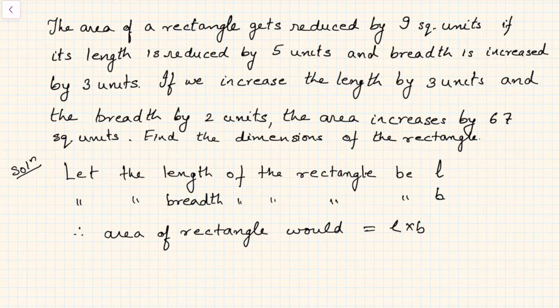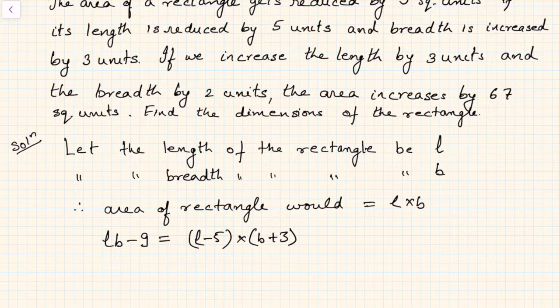Now they say the area of a rectangle gets reduced by 9, so that means LB minus 9. When? If its length is reduced by 5 units, so L minus 5, and breadth is increased by 3 units, so B plus 3. This is the first equation.